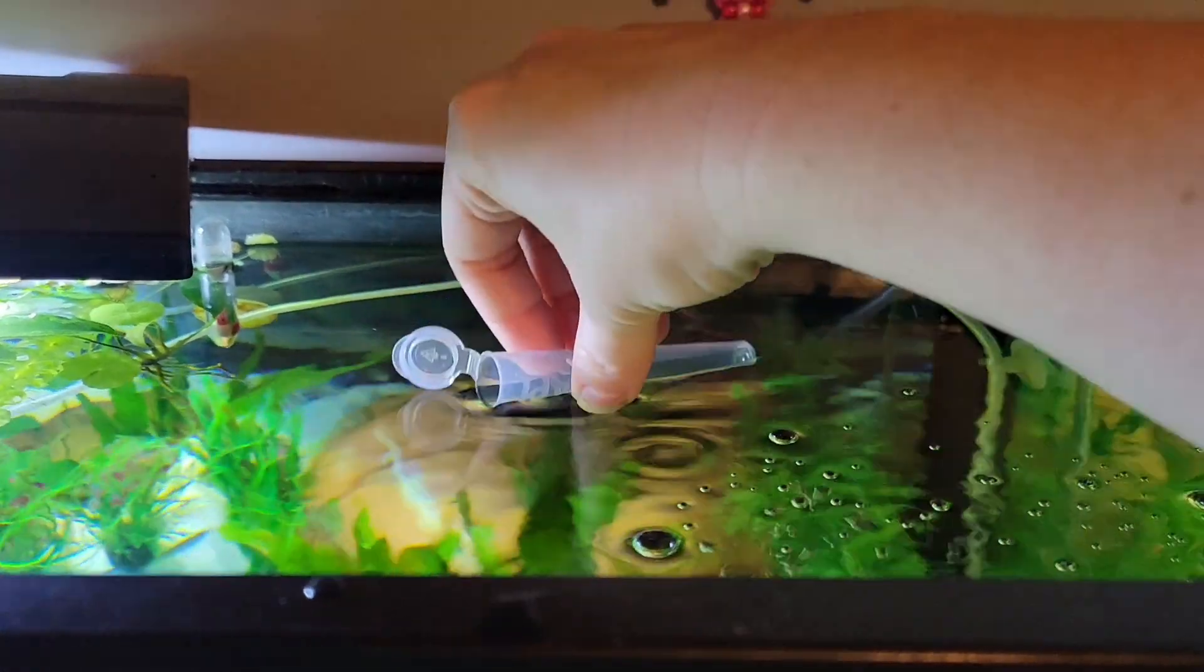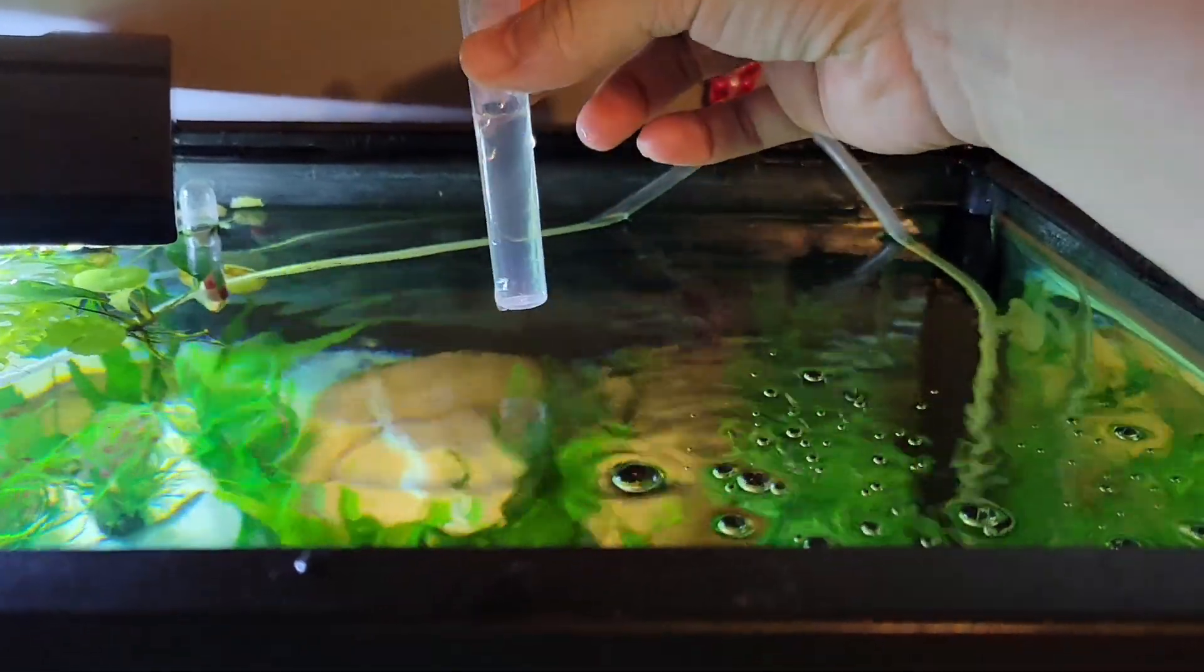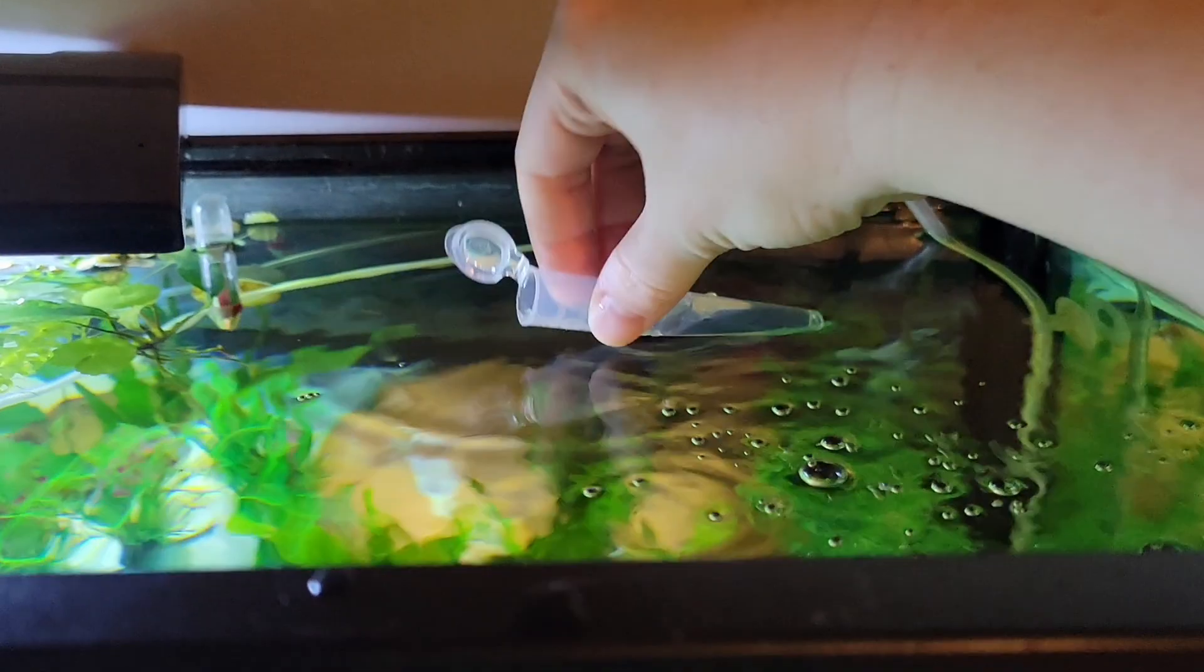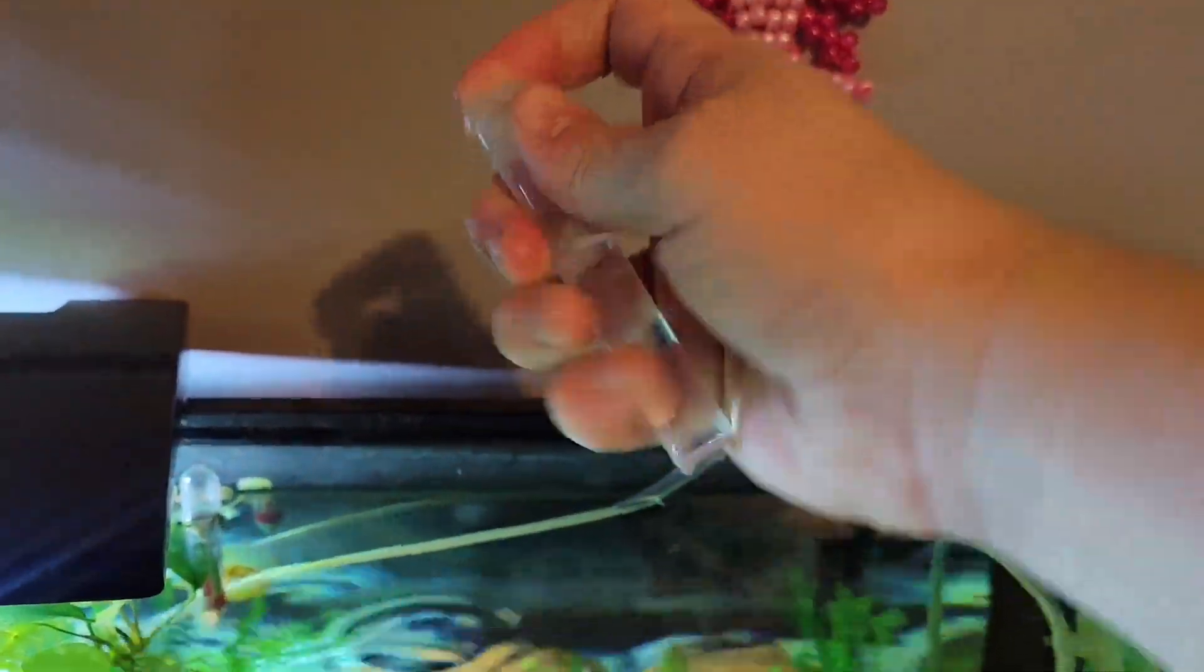So to begin, you are going to fill the little test tubes that come in the kit with your aquarium water. You only fill them to the line marked on the test tube. You can go ahead and close the cap once you get it filled.